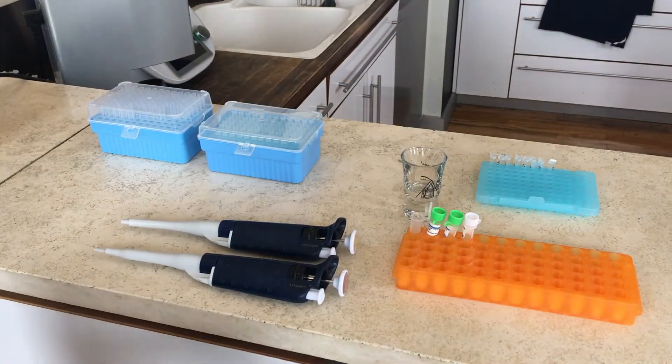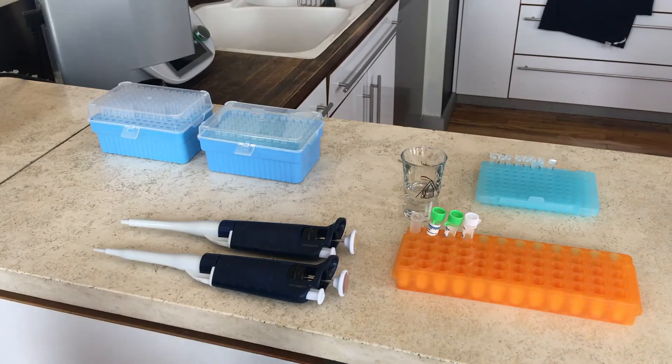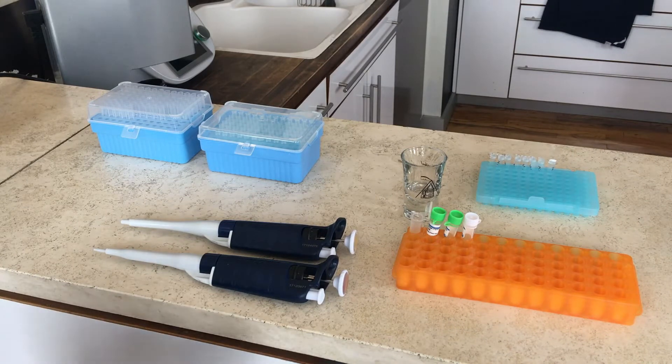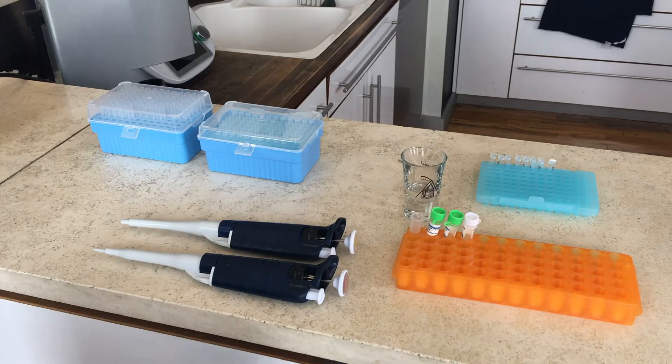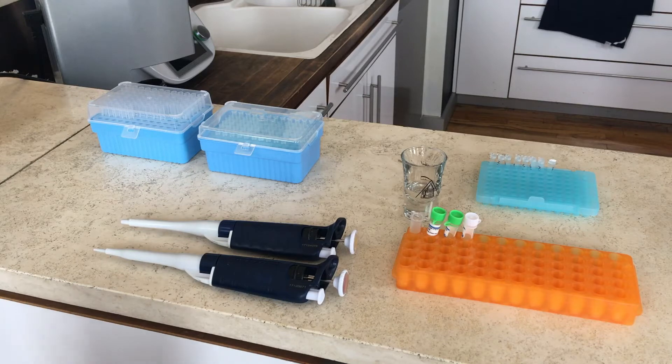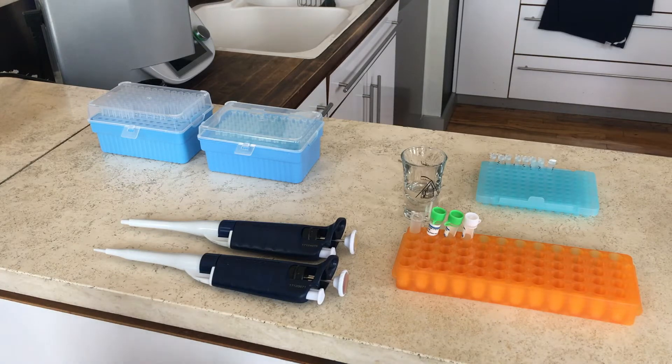That's the end of the extraction process, and we're going to start with the amplification process. The most important step right now is to mix a blend of the fungal primers ITS1 and ITS4, as well as master mix and distilled water, and we're aiming for 27 microliters per sample.